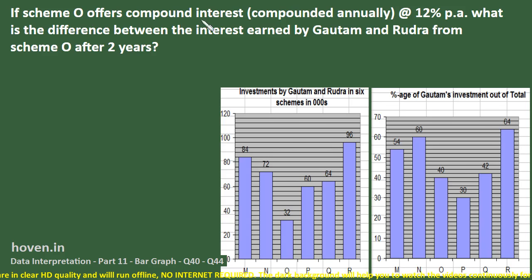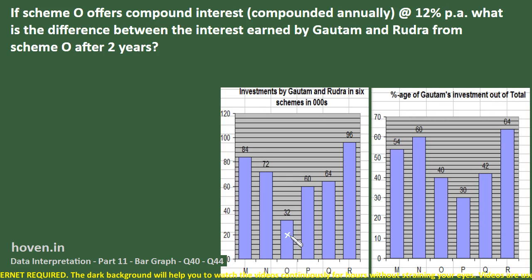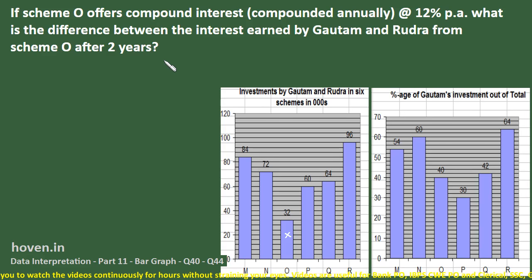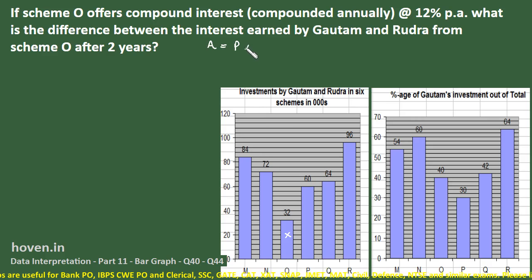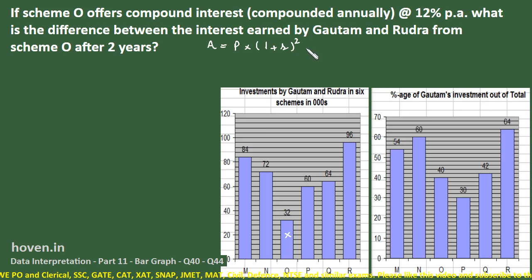Question 2: Scheme O offers compound interest compounded annually at 12% per annum. What is the difference between the interest earned by Gautam and Rudra from scheme O after 2 years? Let us first write the formula for compound interest after 2 years. The amount after 2 years is P × (1 + r)² and subtracting P gives the interest.